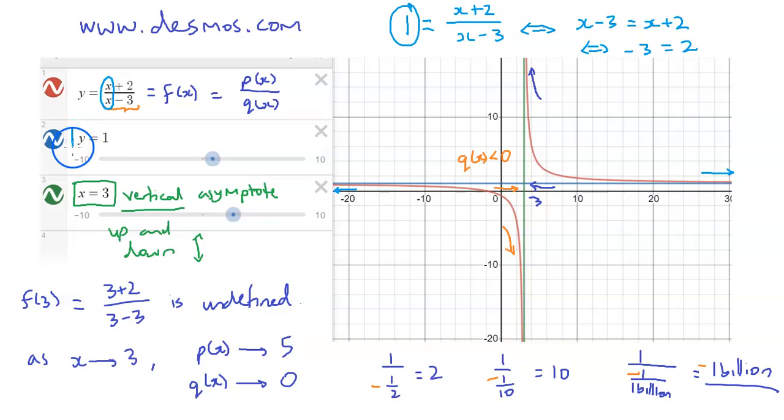All right, so this situation here, this is called a horizontal asymptote. So horizontal means side to side, like this, and hence the name horizontal asymptote.